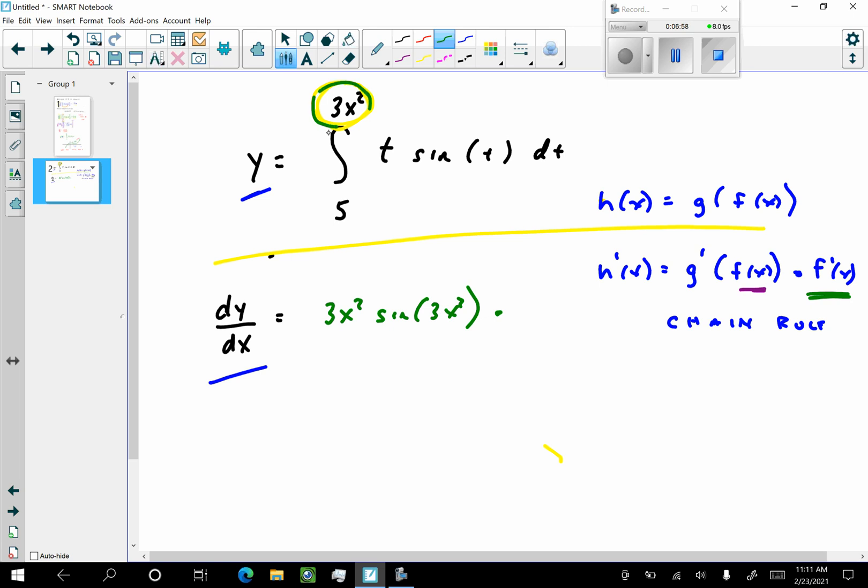And what is the derivative of the inside? Well, the derivative of the inside is 3x². The derivative of that is going to be 6x. So dy/dx, and I could simplify this, is going to be 18x³ sin(3x²).